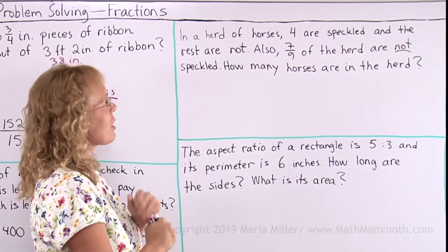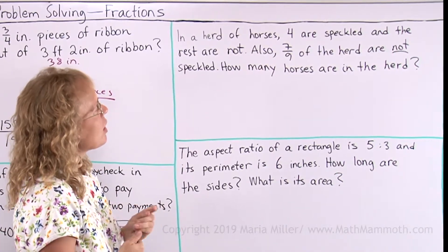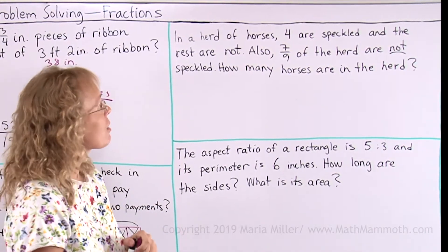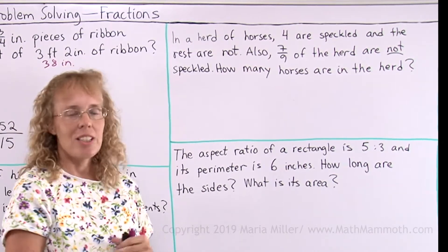In a herd of horses, 4 are speckled and the rest are not. Also, 7 ninths of the herd are not speckled. How many horses are in the herd?